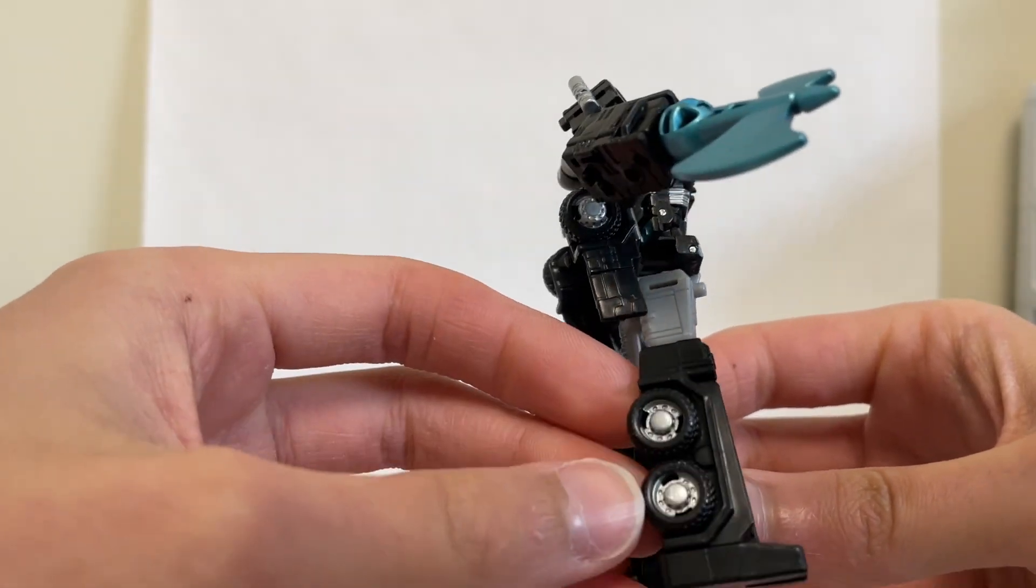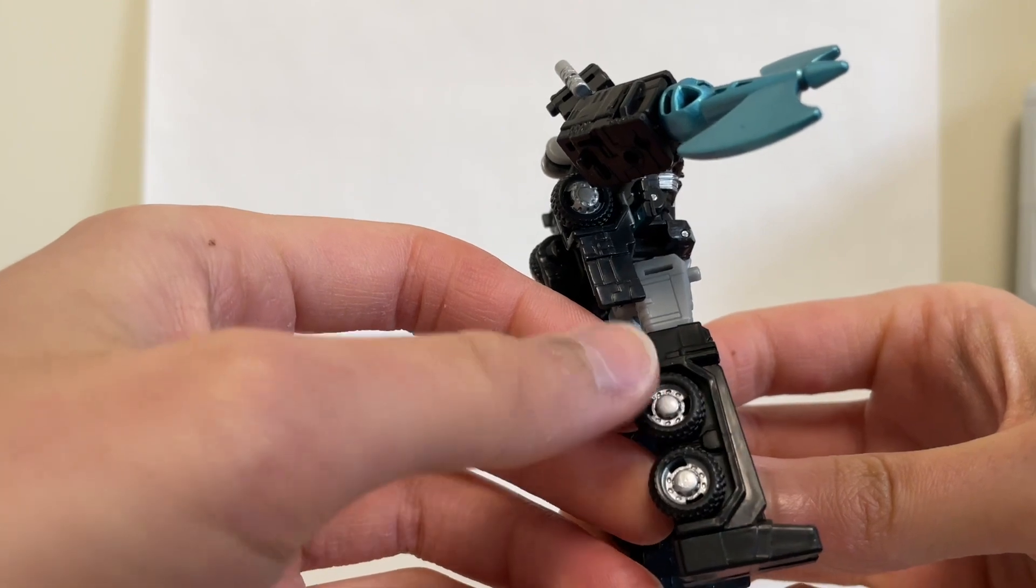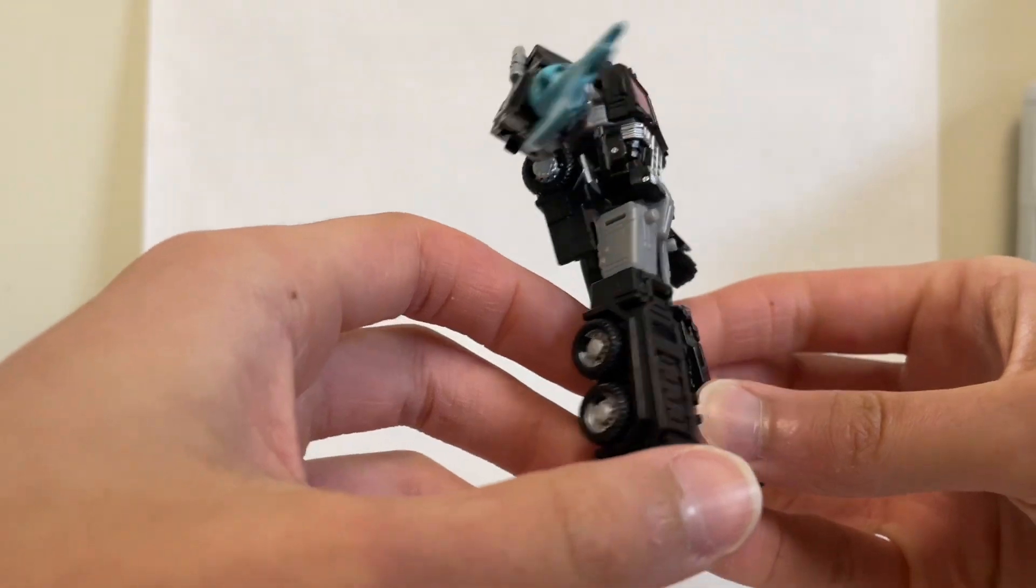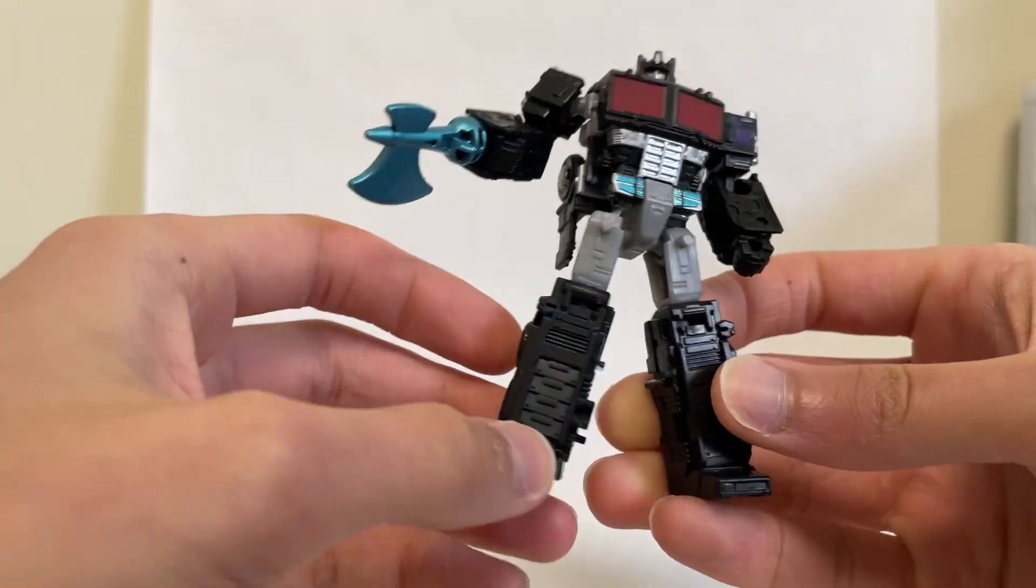So they did the wheel rims, which looked fantastic. I like Kingdom Core Class Optimus Prime, or the legacy version. They painted those wheel rims, just look so nice.